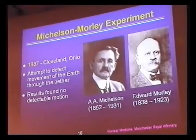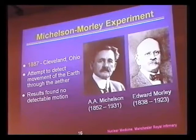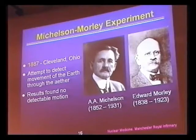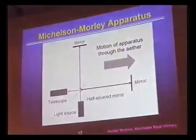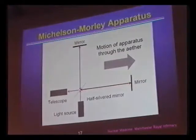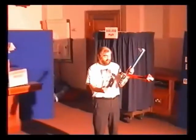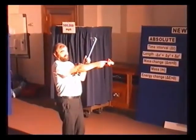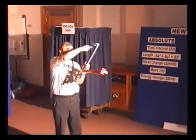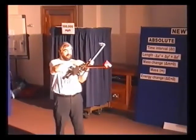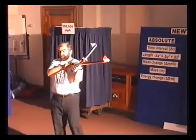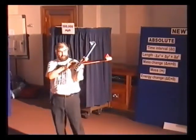But in 1887, Michelson and Morley performed a famous experiment which attempted to measure the movement of the Earth through the ether. The apparatus they used — I have a model of that here — consisted of a light source at the bottom shining up towards a half-silvered mirror. Half of the light went off across the red arm to a mirror where it reflected back, and half went straight up the blue arm to another mirror where it reflected back. Then from the half-silvered mirror they were both reflected to the detector where they were observed.